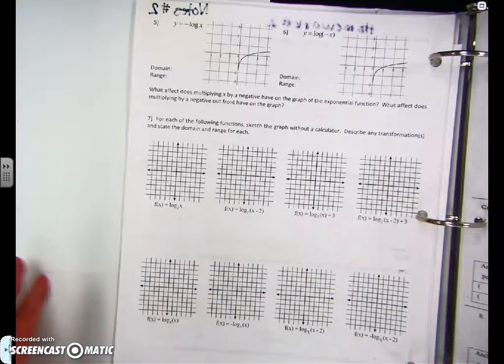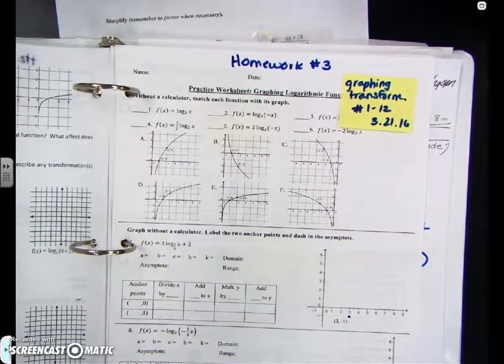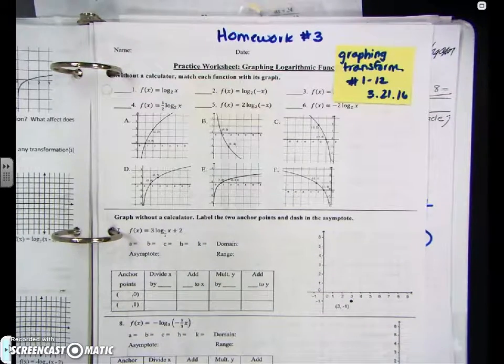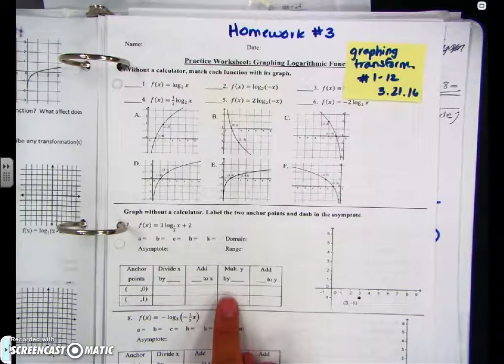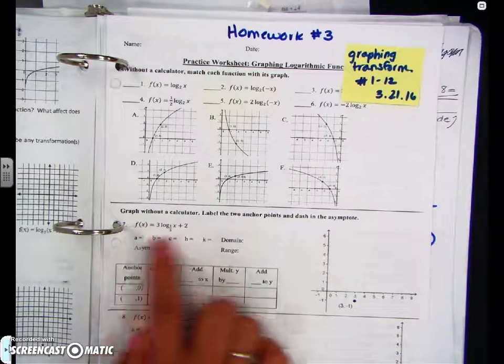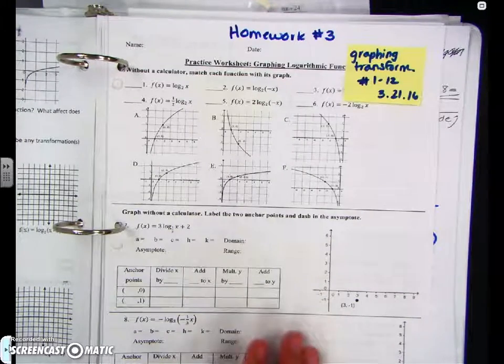Homework number three was to graph these transformations, one through twelve. If you are in third period or seventh period, you had to complete the table. If you are not in third or seventh, you had to only do a, b, h, and k, domain and range, asymptote, and the graph—everything except for the table, front and back, one through twelve.